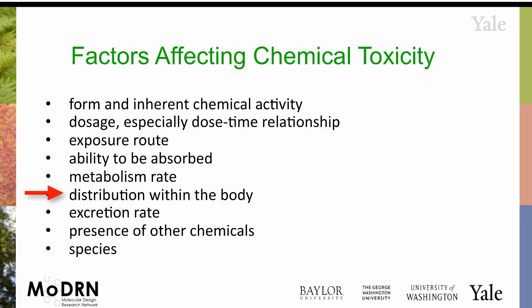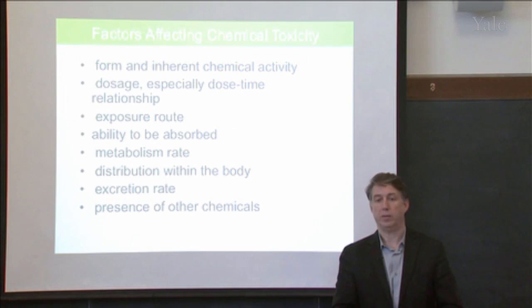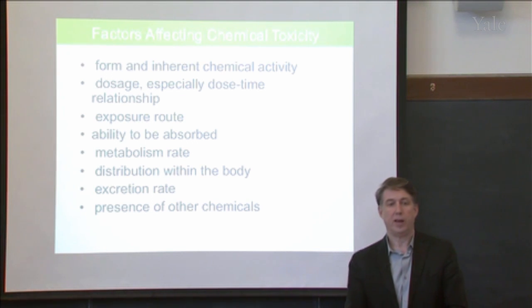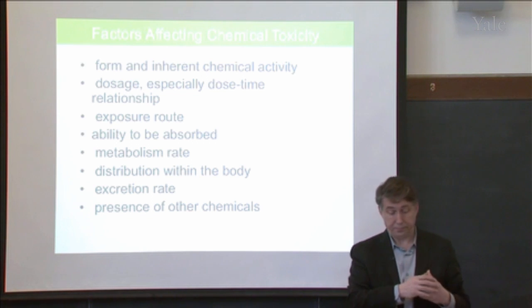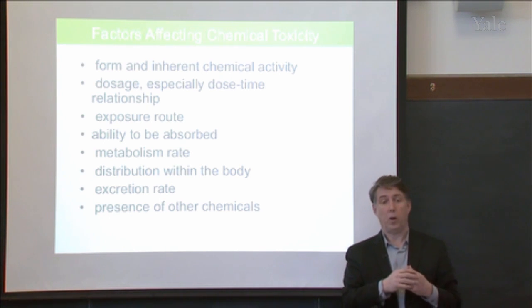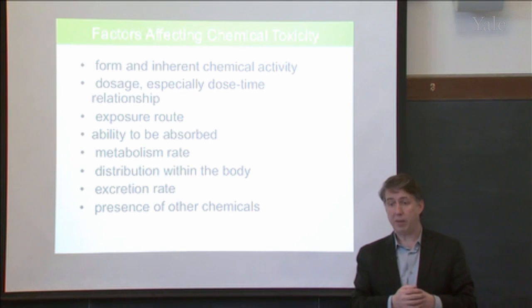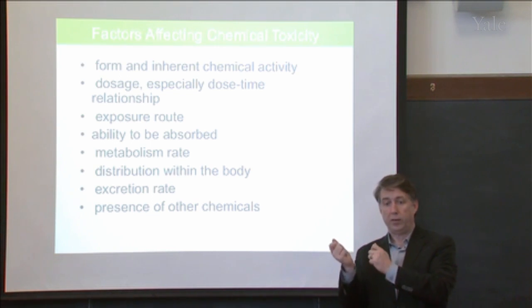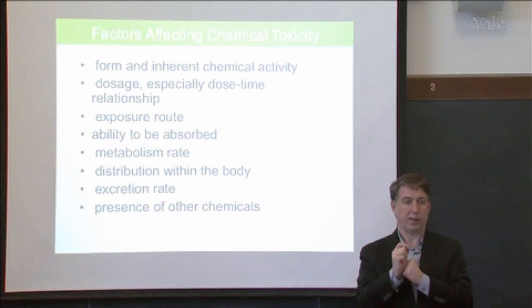Distribution within the body: if it only stays within your digestive system and gets excreted, it can't spread to other organs and it's not going to be able to cause a problem. Excretion rate is directly related to that. The presence of other chemicals is something we're going to return to. Are you ever exposed to one chemical at a time? No — we're all swimming in a sea of chemicals all the time. What you eat, what you breathe, all of those things can either affect things in a positive or negative way from a toxicological standpoint. A toxin can be chaperoned across a biological membrane. Simply saying a substance is toxic or not toxic isn't always the whole story.